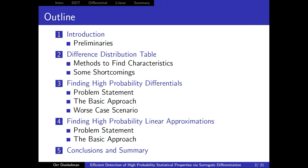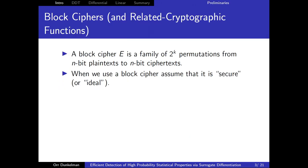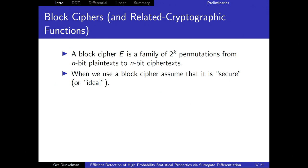To give context, I'll provide a short preliminary introduction. We'll cover basic definitions, then speak quickly about how to find differentials and differential characteristics, and then show our results. A block cipher is a family of permutations from n bits to n bits — this presentation is for permutations but it works the same for functions from n bits to n bits.